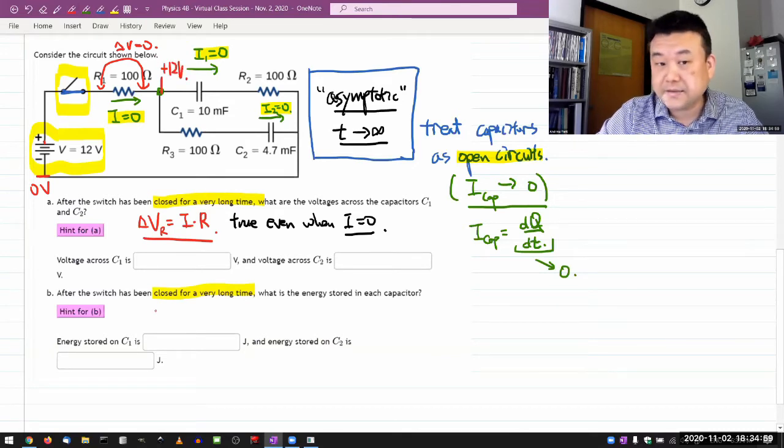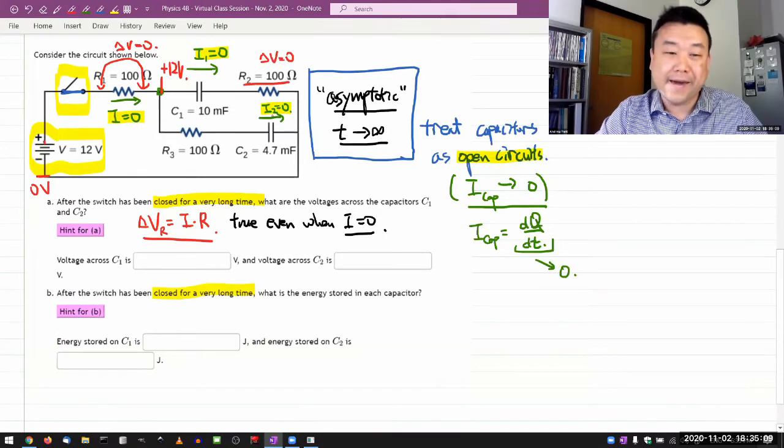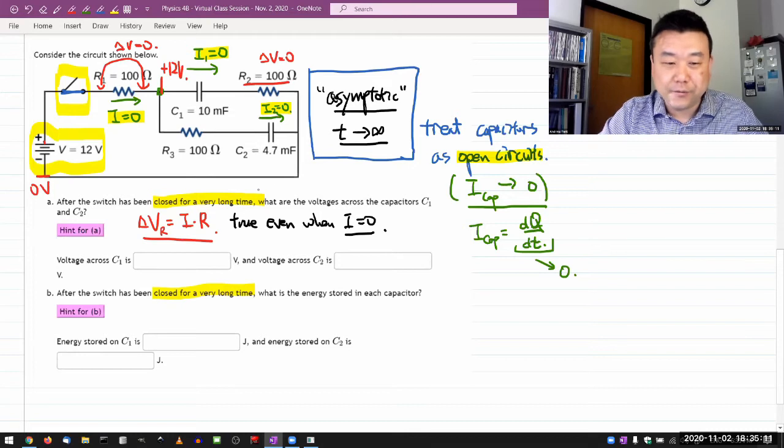The exact same thing applies to the other end here. No current is flowing through this resistor, which means the voltage drop here is also zero again. The zero volt end goes all the way to here, zero volts. So the voltage change across both capacitors...